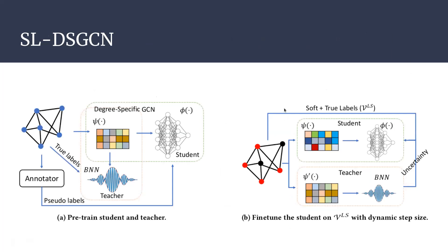The training of this graph neural network is done using a student-teacher paradigm. The idea is that having a prior estimate of labels for the unlabeled nodes improves accuracy. We can discuss this in more detail in the questions section.